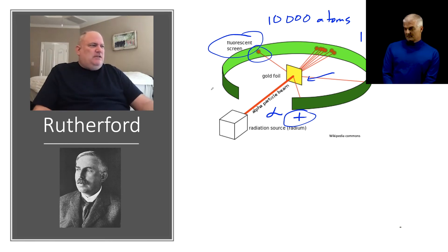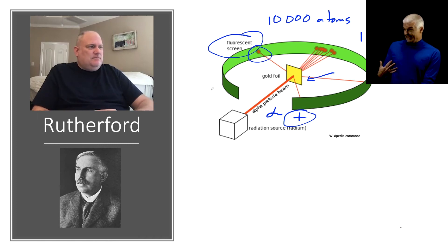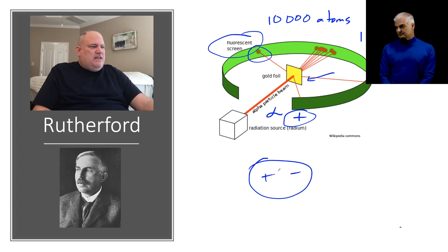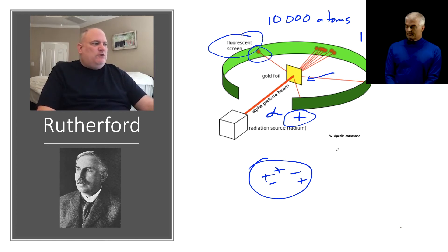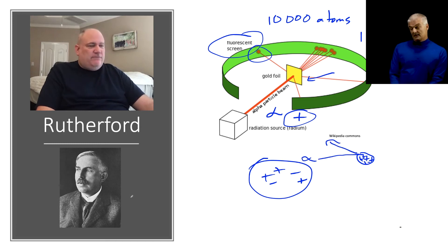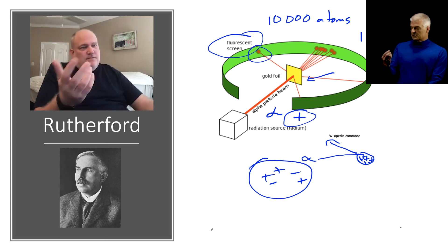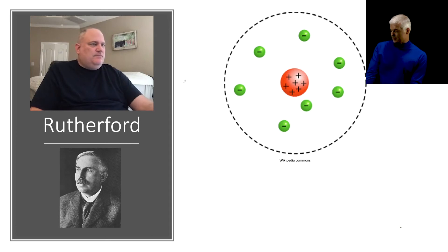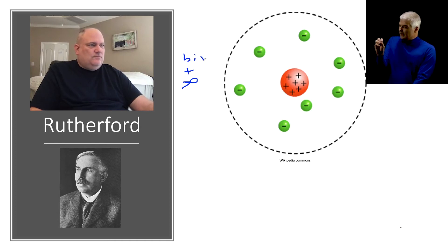Most of the time the alpha particles went straight through. But about one in every 6,000 times, there was a random hit to the side. He said it was as if he shot a cannonball at tissue paper and it came back and hit him. That meant the plum pudding model — positives and negatives randomly interspersed — couldn't be the case, because a big fat positive would just roll right through.